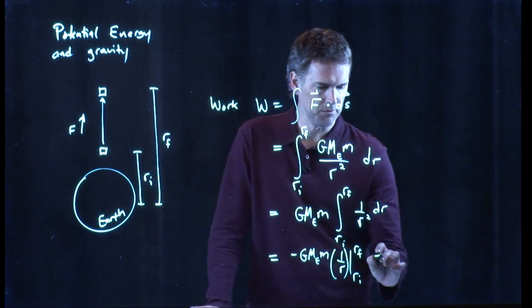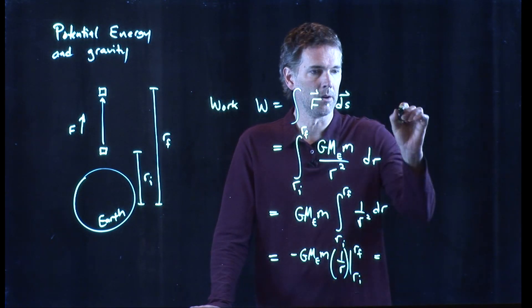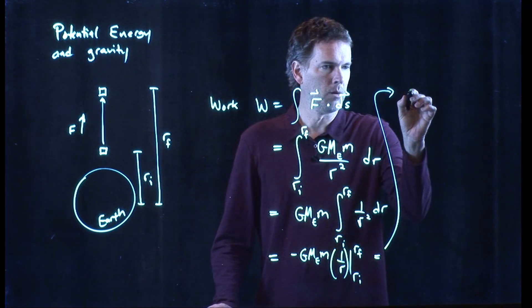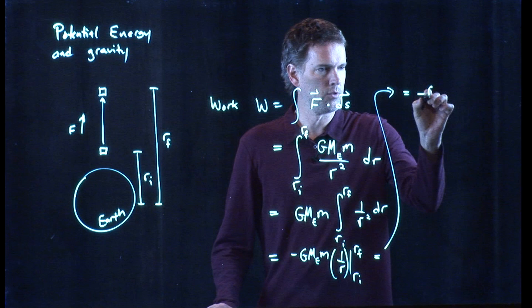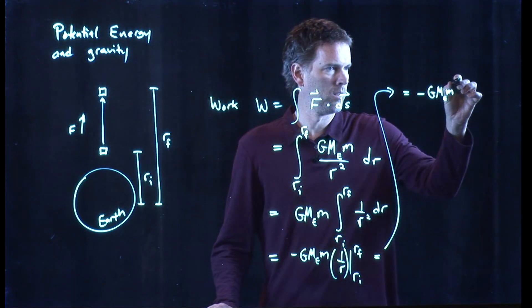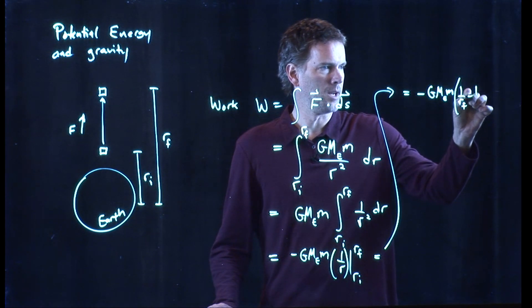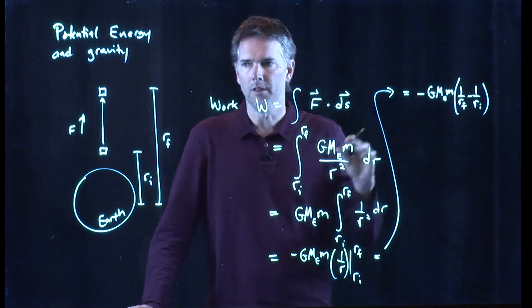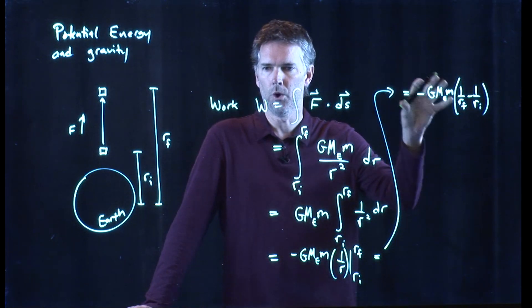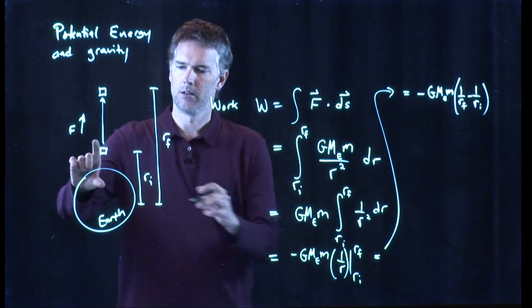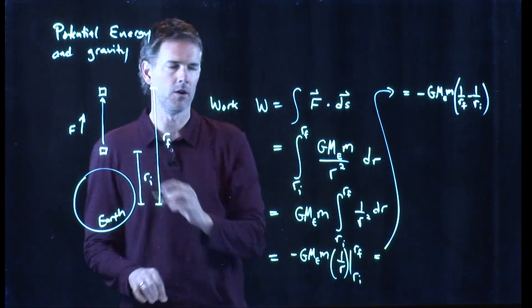And so this becomes the following. We're going to go up here. It becomes negative G m_E m, 1 over r_f minus 1 over r_i. So this is, in general, how much work it takes to move an object from one r_i to a different r_f.